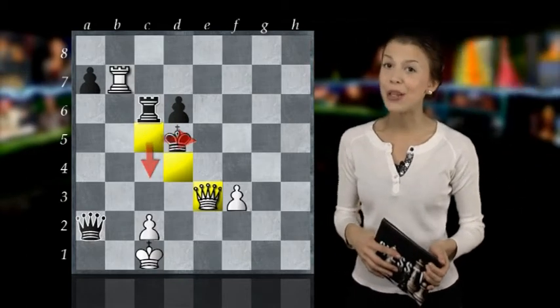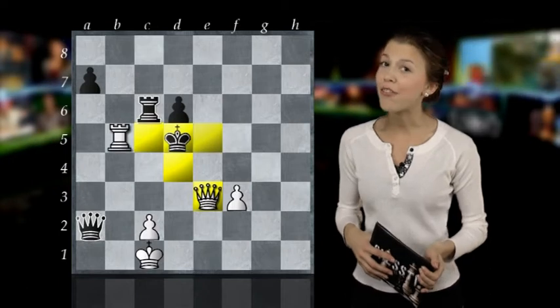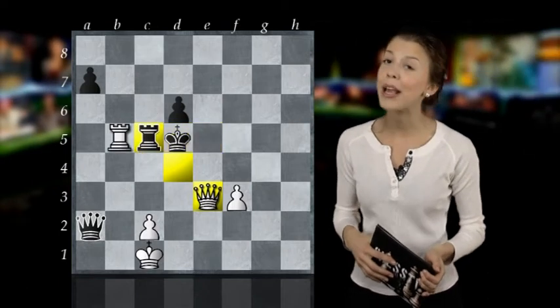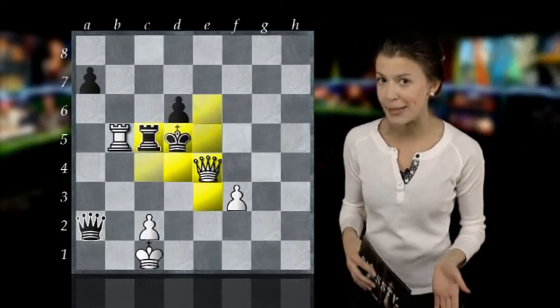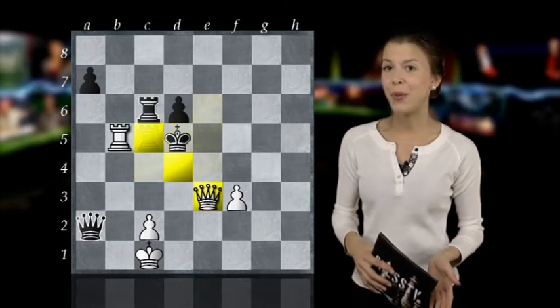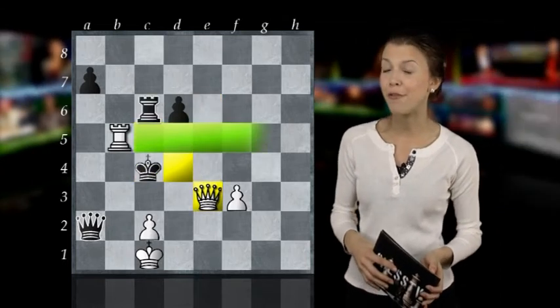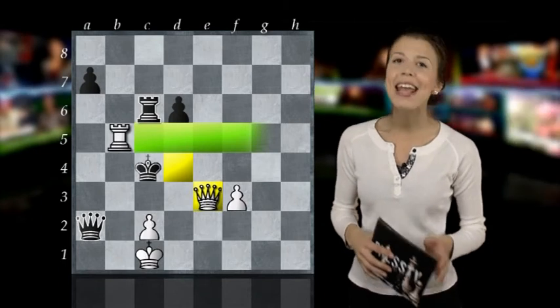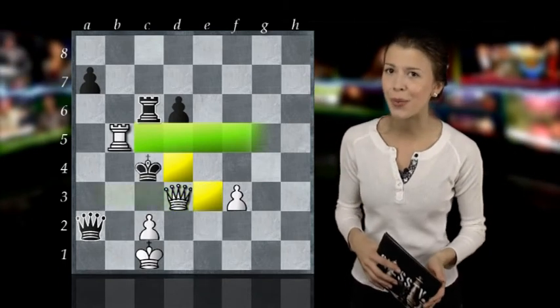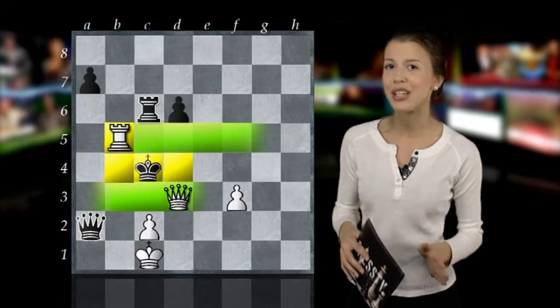If he will go to d4, we check on b5 with the rook. If the black rook blocks the check, we play queen to e4 with a checkmate. Instead of blocking the check with the rook, Black can choose to play down the king to c4, threatening the rook. In this case, we play queen to d3 with a check that simultaneously guards the rook, making it a checkmate.